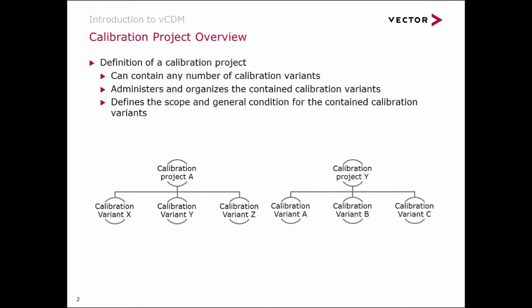A project can be an engine variant or represent a customer. The definition is individually determined by each team. The calibration variants include hex and S19 file, as well as A2L and the appropriate parameter set files.